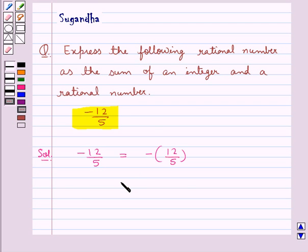That is we can write minus 12 upon 5 is equal to minus 2 and 2 upon 5, or this is equal to minus 2 plus 2 upon 5.